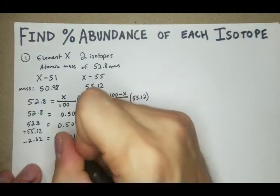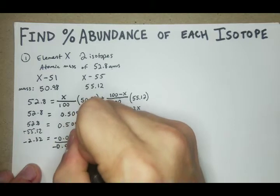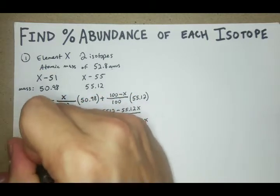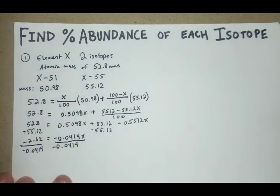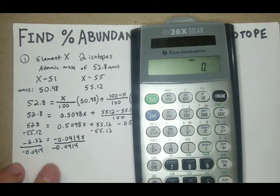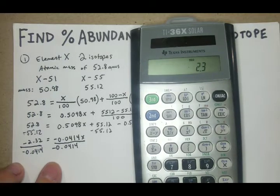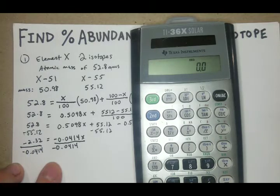Now we can just divide both sides by negative 0.0414. On this calculation, be really careful to make sure you add the negative sign to both, because if you don't, it's going to really mess it up. So negative 2.32 divided by negative 0.0414 equals,